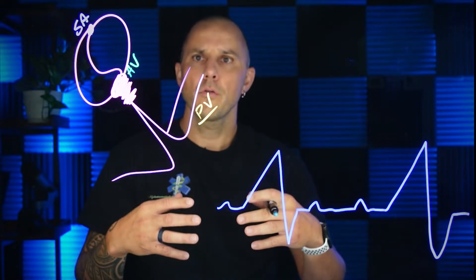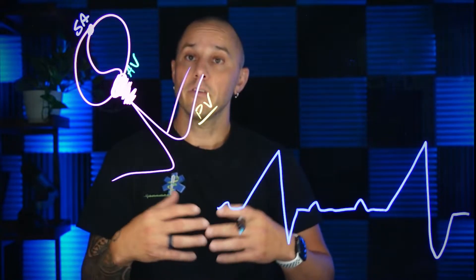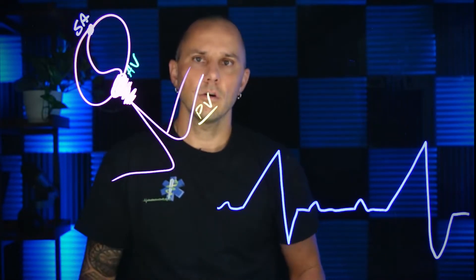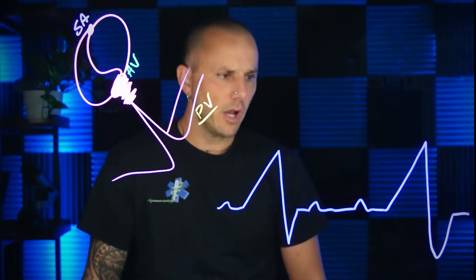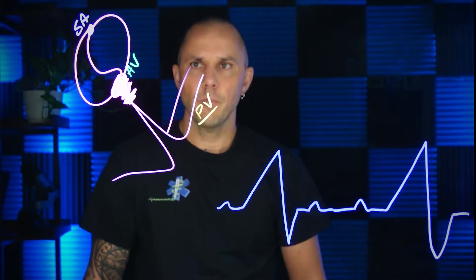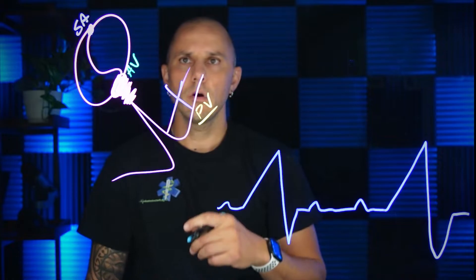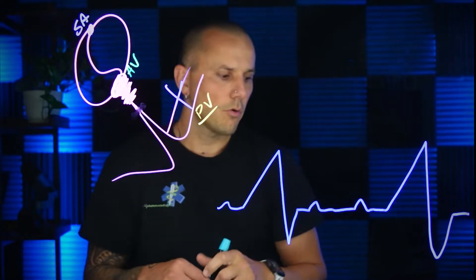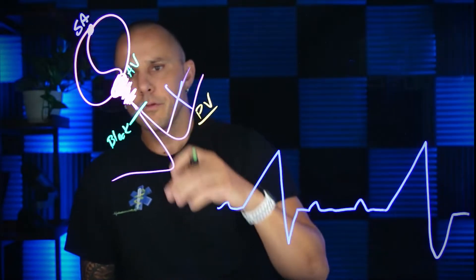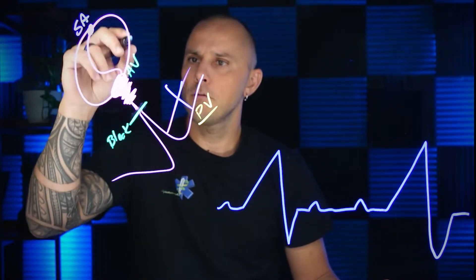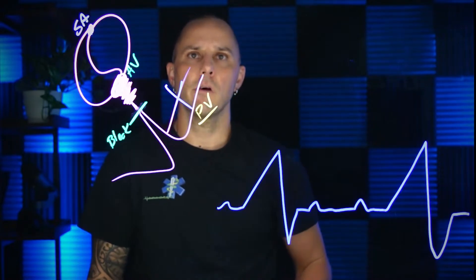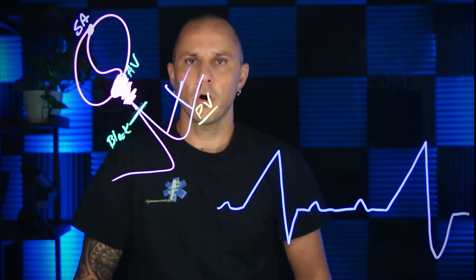A complete heart block is when one part of the heart assumes that something above it is no longer working, and so an escape rhythm takes place. We want escape rhythms to take place — otherwise, we would have no fail-safe mechanisms if our SA node stopped working. Since we have these giant wide and bizarre QRSs, we can probably assume the pacemaker for this heart is somewhere in the Purkinje fibers. We know it's down there because it's less than 40 beats a minute, it's wide and bizarre, and it's ventricular in nature. The block is up higher, so P waves firing from the SA node and AV node never make it down. The ventricles don't know what's going on, so they fire on their own at their inherent rate of 20 to 40 beats a minute.